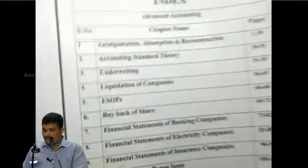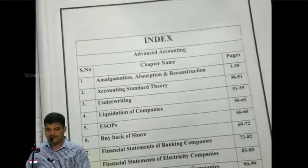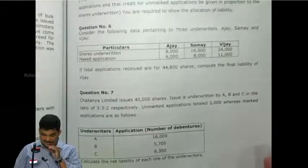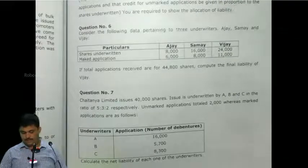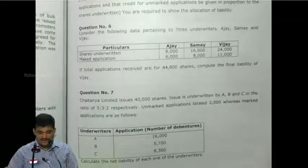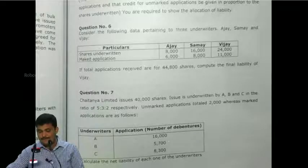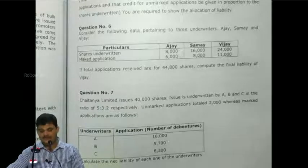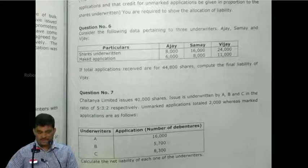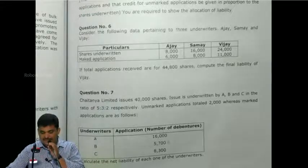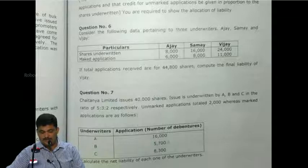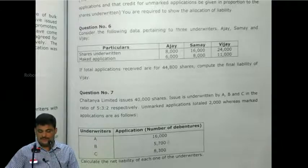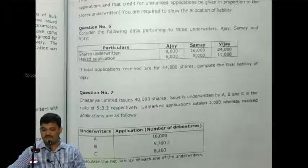So let us take page number 51, question number 6. Consider the following data pertaining to three underwriters: Ajay, Samay, and Vijay. Shares underwritten: 8,000, 16,000, 24,000. Marked applications: 6,000, 8,000, and 11,000. If total applications received are for 44,800 shares, compute the final liability of Mr. Vijay.